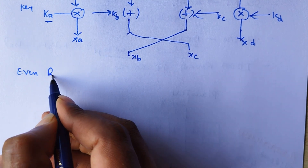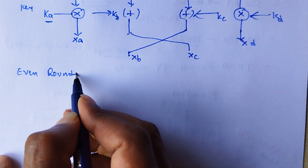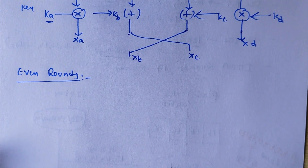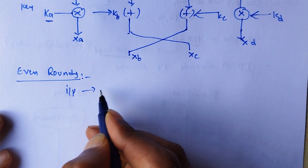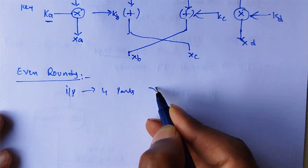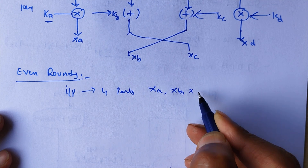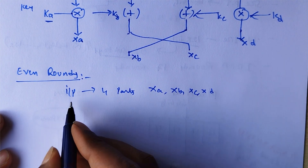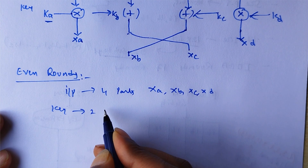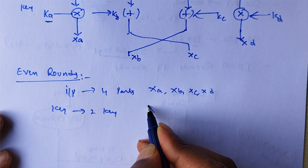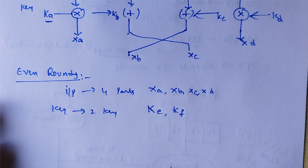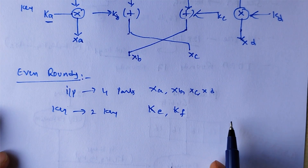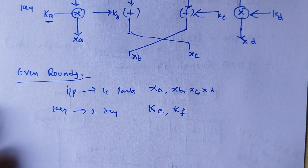In even rounds, the input is still 4 parts: XA, XB, XC, XD, but the keys are only 2 keys — KE and KF — since the first 4 keys were already used. So the total is 4 input parts and 2 keys.